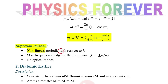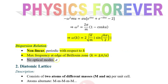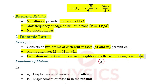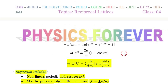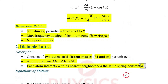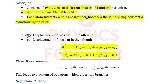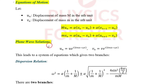The dispersion relation for the monoatomic chain is non-linear and periodic with respect to k. The maximum frequency occurs at the edge of the Brillouin zone at k = ±π/a. In the monoatomic case, there is no optical mode. For the diatomic lattice — unlike the monoatomic case with one atom — it consists of two atoms of different masses, M and m, per unit cell, arranged alternately, each interacting with nearest neighbors via the same spring constant alpha.